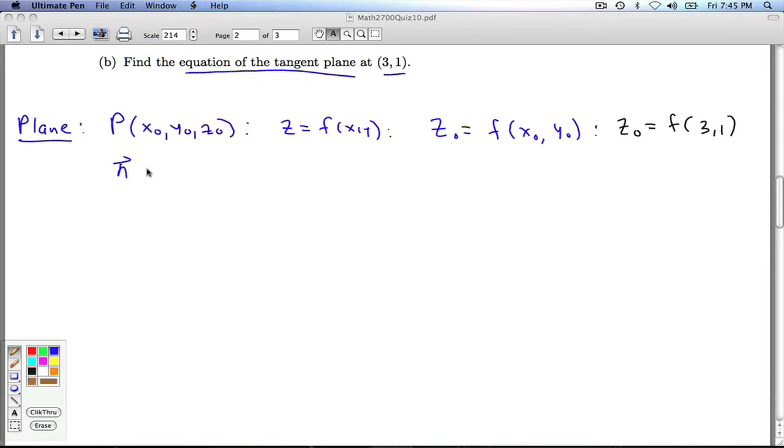How do we get the normal vector? Well, once again, we have z equals f of x, y, and I can think of that as being z minus f of x, y equals 0. And writing it this way allows me to think of this as being a level surface of a function of 3 variables, f of x, y, z.